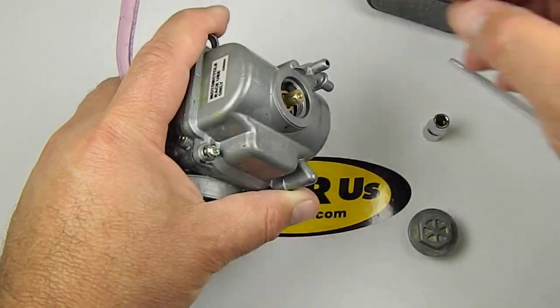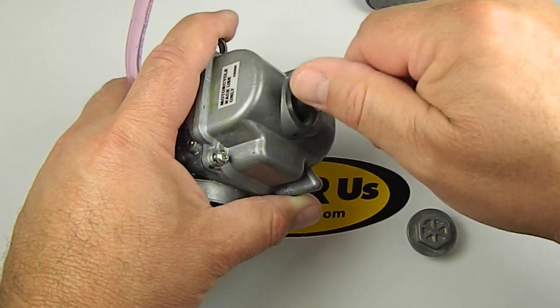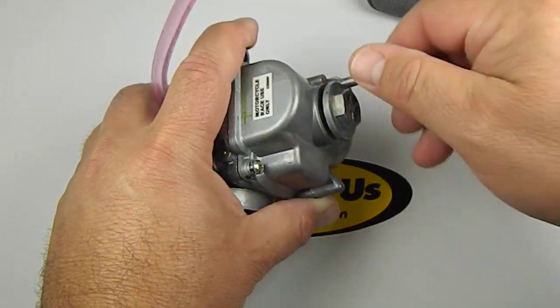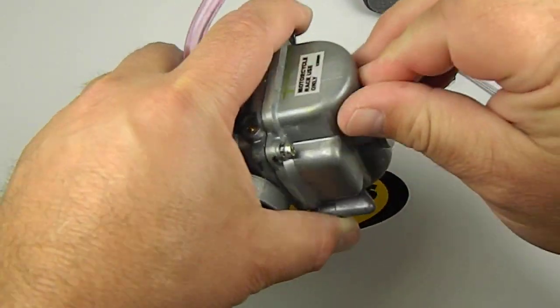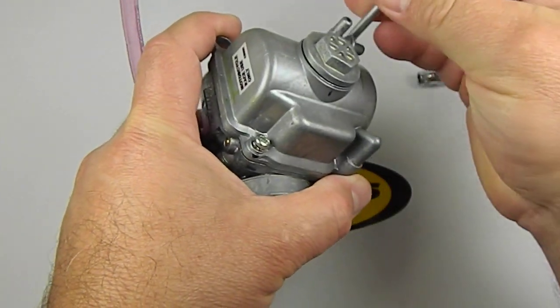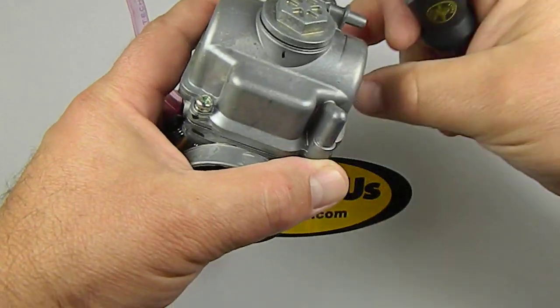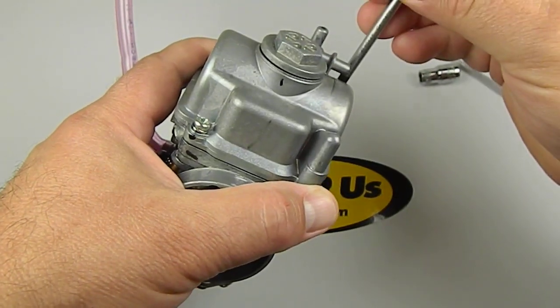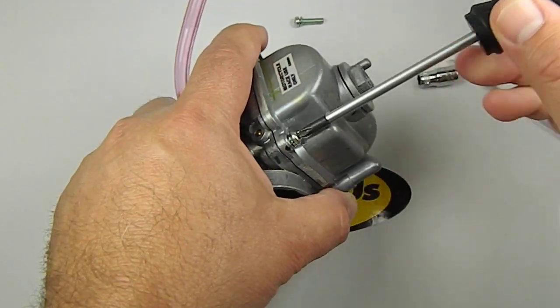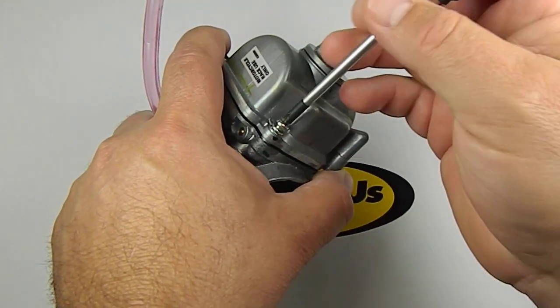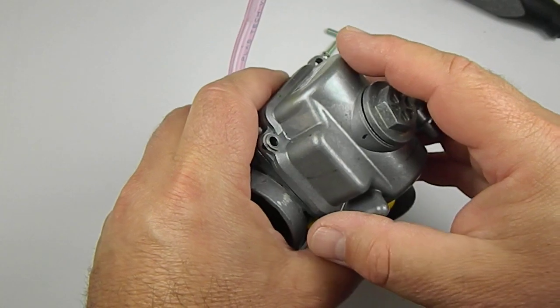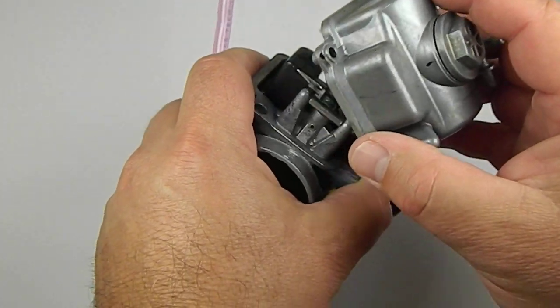If you do not have that nut, then we've got to take the float bowl cover off, and you usually have two or four screws holding it down.